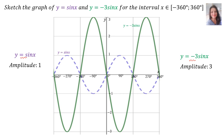Remember, amplitude is always positive. So although A's value is negative 3, you answer that the amplitude is positive 3. And when you look at your graph, it's very clear that your graph turns at 3 and at negative 3.